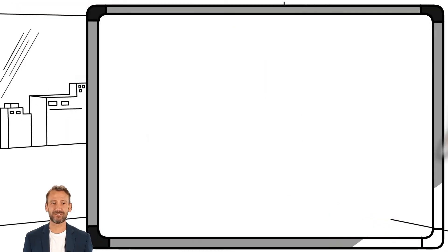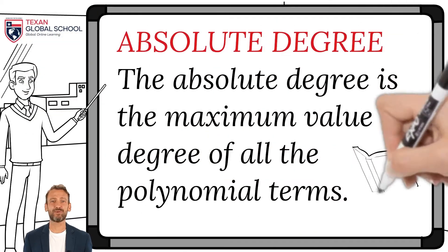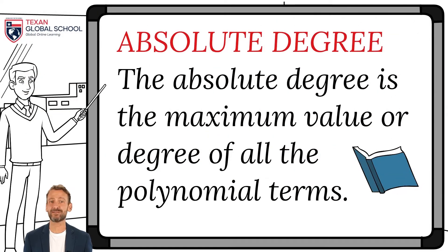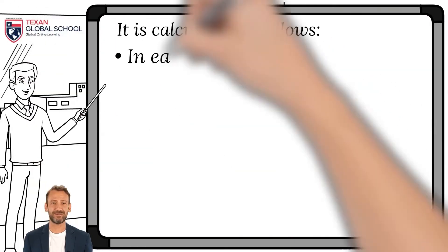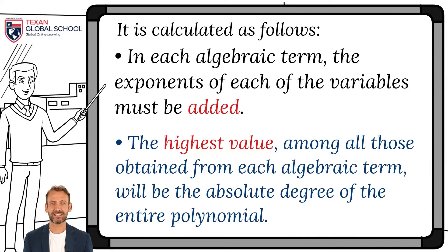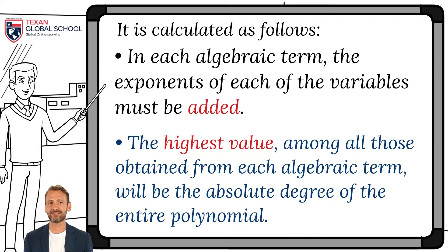The absolute degree is the maximum value or degree of all the polynomial terms. It is calculated in each algebraic term by adding the exponents of each of the variables. The highest number of all the values obtained from each algebraic term will be the absolute degree of the entire polynomial. It should be noted that neither the numerical coefficients of each term nor the independent term affect the absolute degree.